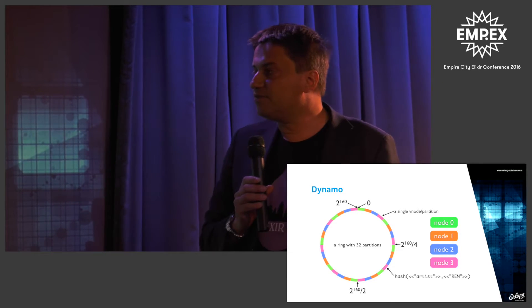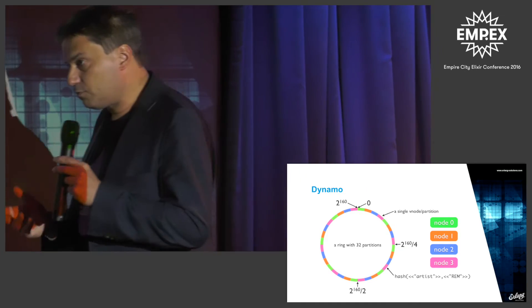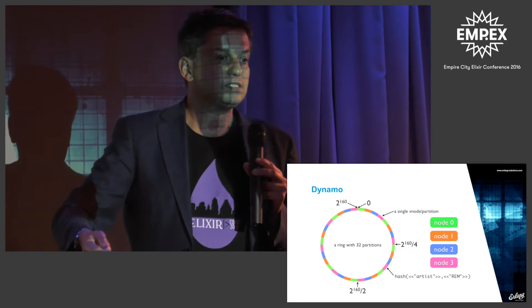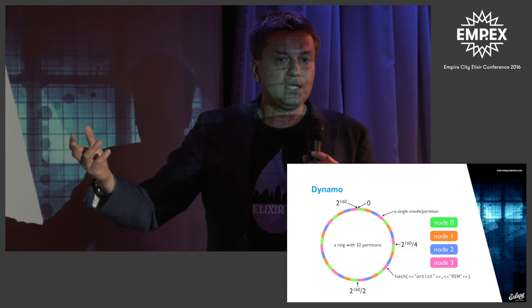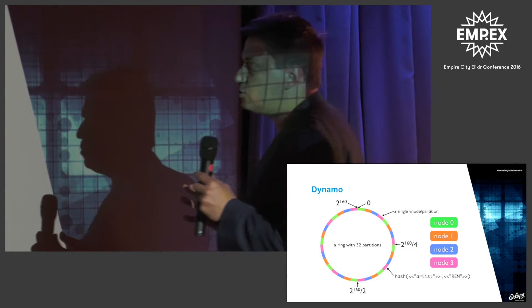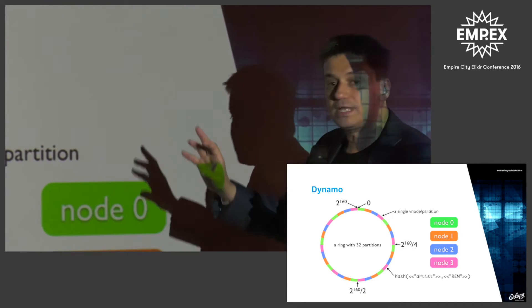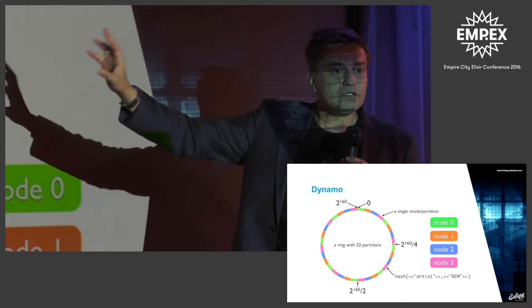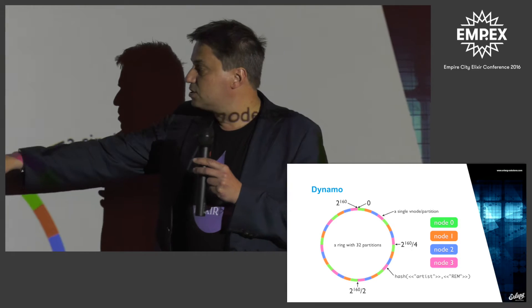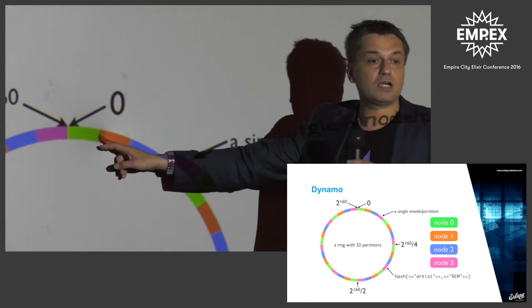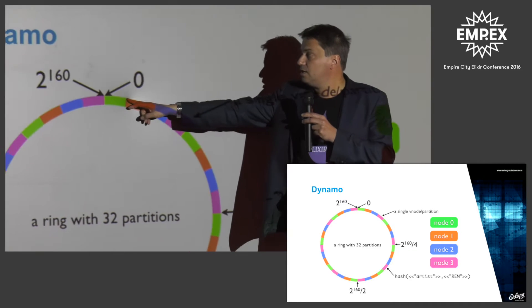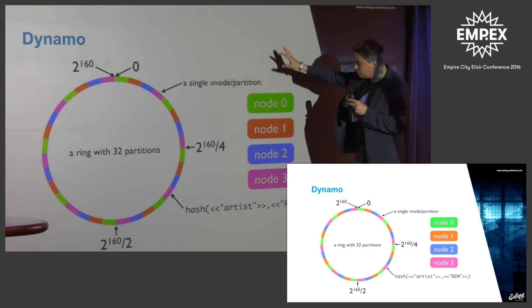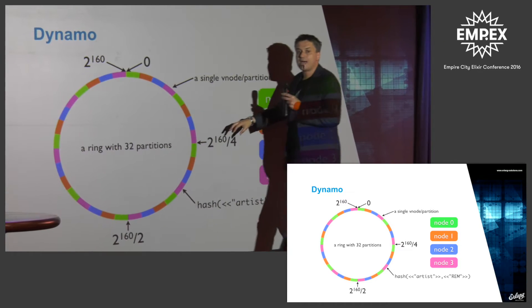The Dynamo principle, simplified: you've got a key space — think in terms of users, session IDs, or in IoT, devices. Every session or user will have a unique identifier. By hashing that unique identifier, you get a unique number between 0 and 2 to the power of 160. You then break that key space into 32 smaller partitions. Each small partition maps to a physical node.